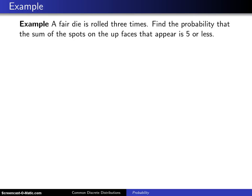Here's an example that illustrates the discrete uniform distribution. A fair die is rolled three times. Find the probability that the sum of the spots on the up faces that appear is five or less.